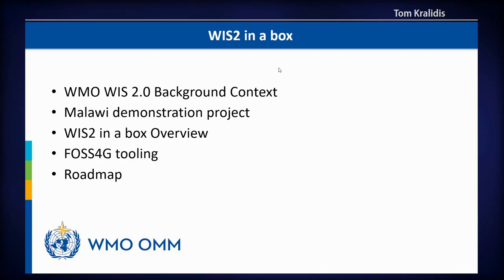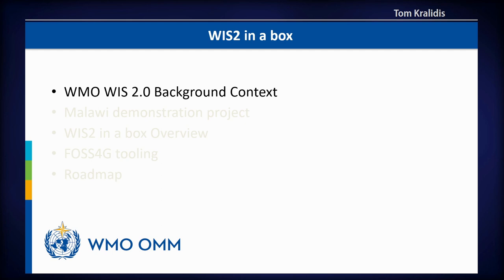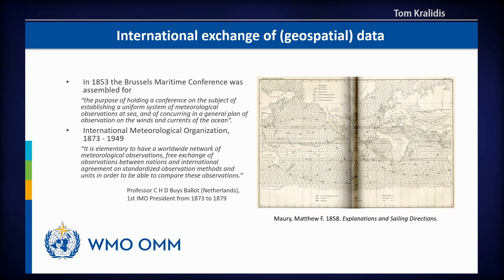The WIS is the WMO information system, used to exchange weather data between WMO member states for weather forecasting and other purposes. Looking at the origins of international data exchange, interoperability, and standardization in the weather context, this can be traced back to the 1850s, where standardized weather observations were exchanged over the oceans to make sailing charts. In 1873, the International Meteorological Organization was formed to coordinate the free and open exchange, standardization, and interoperability of data.